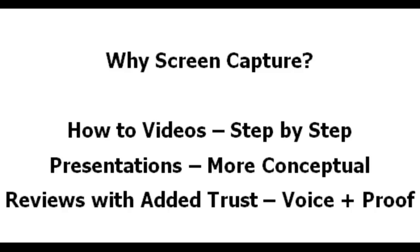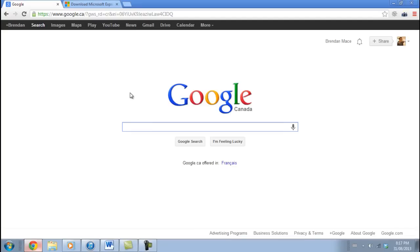So those three things are just some really good starting-off ideas for ways you can effectively use this kind of software that I'm going to show you in the rest of this video. The recording software I'm referring to is freely available on the internet — all you need to do is go to your favorite search engine and type in Microsoft Expression Encoder 4.